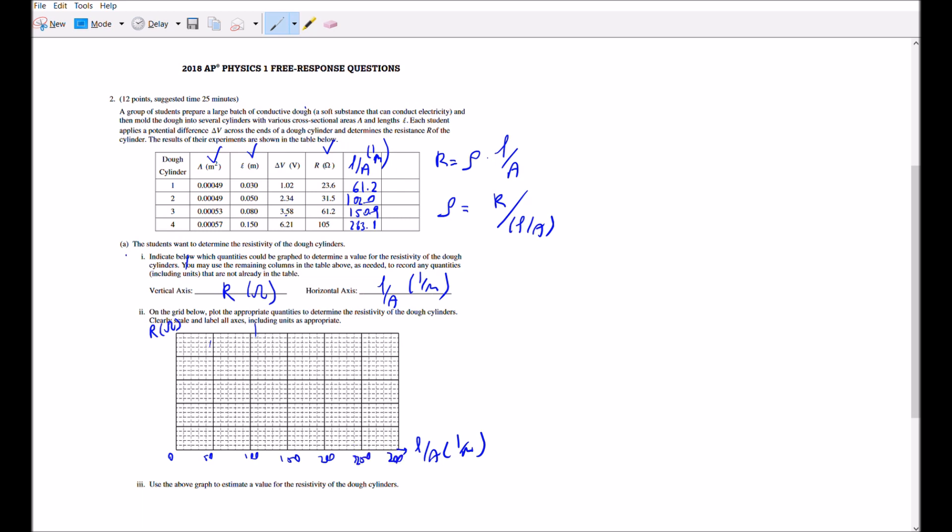If you look at the numbers for resistance, it goes from 23 to 105 and you have five sections, but you can just leave it at 100 or you can go for 125 with intervals of 25.